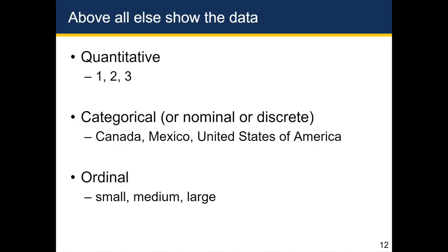Ordinal data are data we won't interact with much in this course directly. This includes things like small, medium, large — which are in effect a type of category, but they have a natural ordering to them, which makes them in some senses similar to quantitative data. So if you have ordinal data, you'll want to think about which types of plots useful for quantitative versus categorical variables are going to most effectively communicate your message.